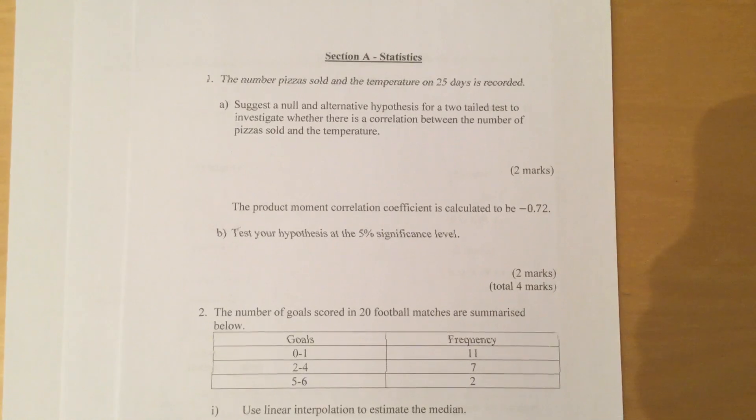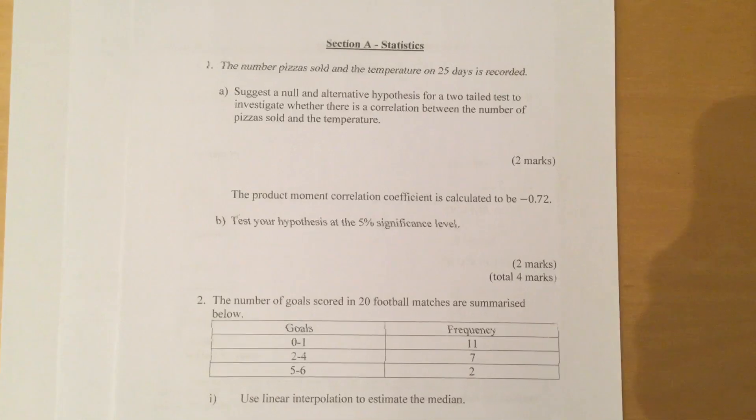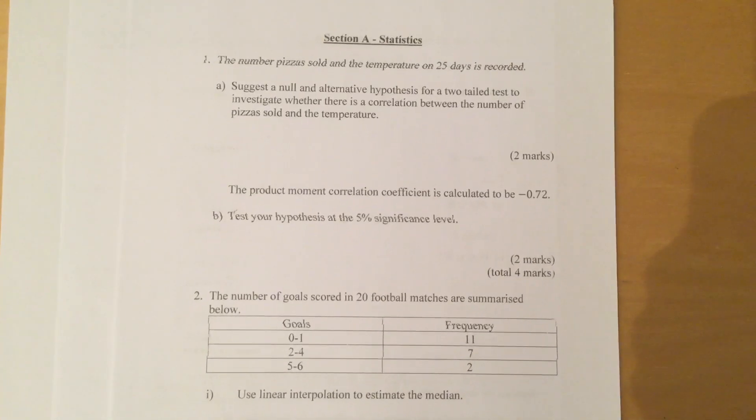The product moment correlation coefficient is calculated to be minus 0.72. Test your hypothesis at the 5% significance level.